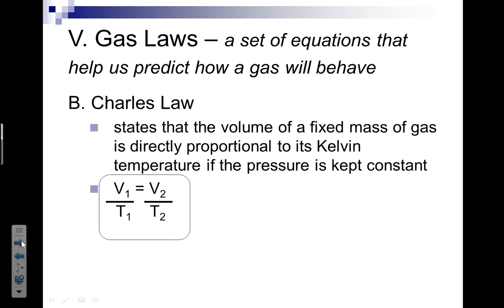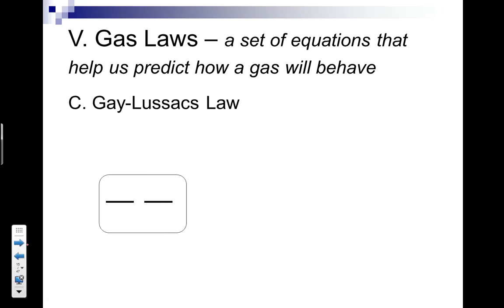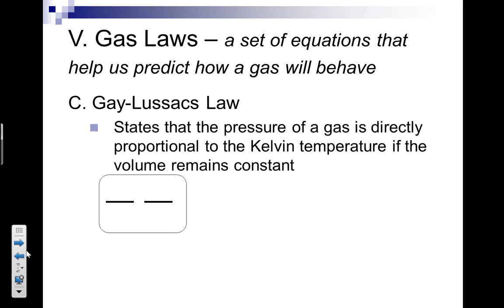The third gas law is known as Gay-Lussac's law. Gay-Lussac's law states that the pressure of a gas is directly proportional to the Kelvin temperature if the volume remains constant. So volume is constant with Gay-Lussac's law. They're directly related. So P1 divided by T1 equals P2 divided by T2.